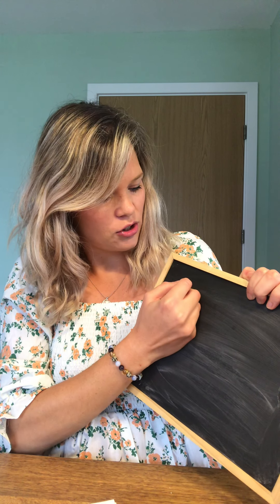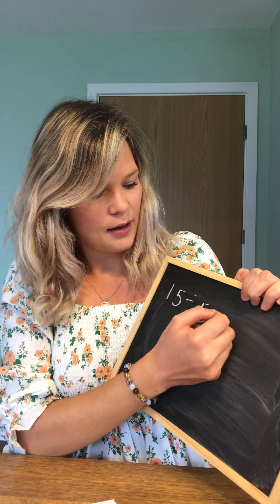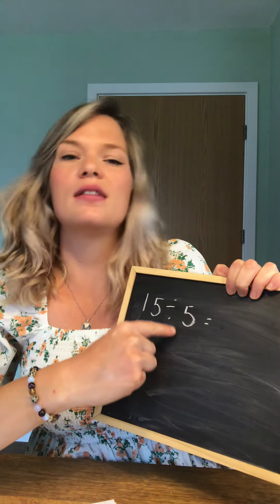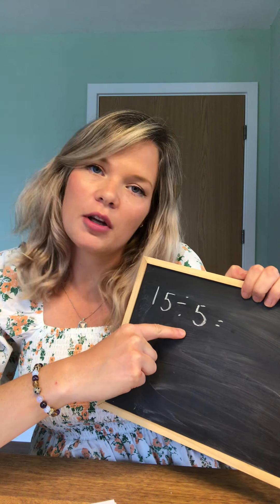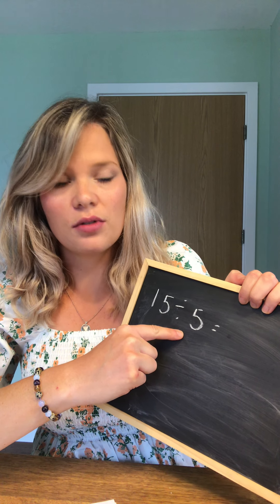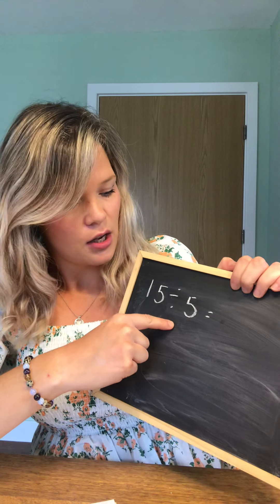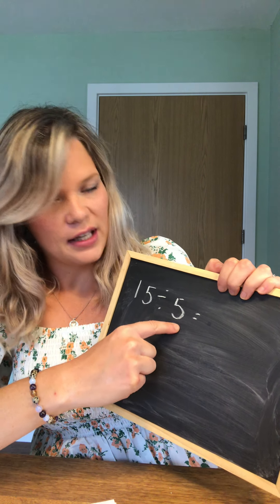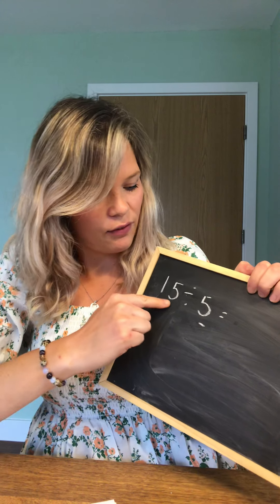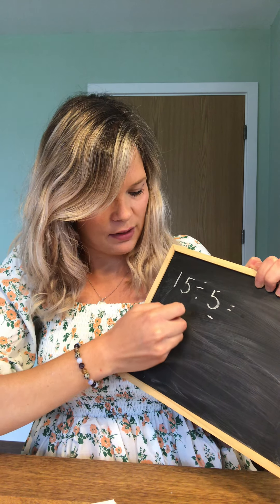So the first question says 15 divided by 5. The first thing you need to do is think about what this symbol means. We've spoken about it before in class — that is the sharing symbol. So to do this method we're going to use sharing circles. How many sharing circles do I need? I need 5, because I'm sharing 15 between 5. So I'm going to draw my 5 sharing circles.